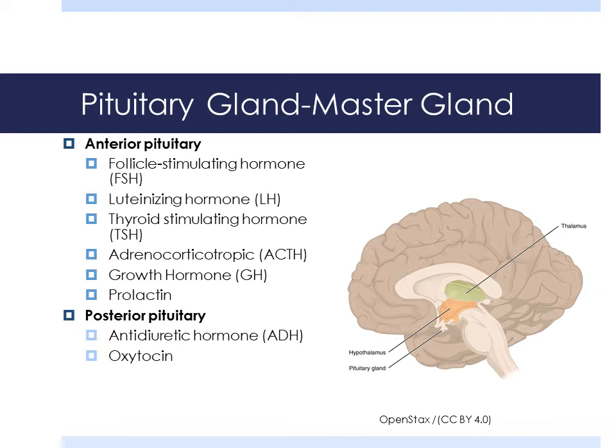Most of these hormones can be given to patients for deficits. These hormones may be synthetic or natural. Others may be recombinant. Recombinant DNA technology is the process of taking a gene from one organism and inserting it into the DNA of another. This is also called gene splicing.